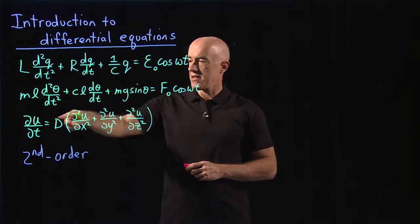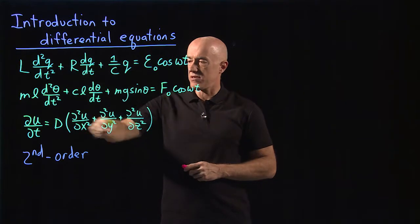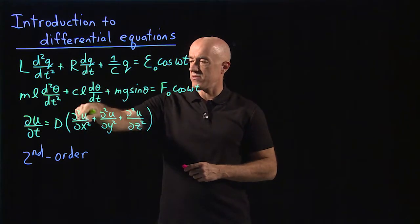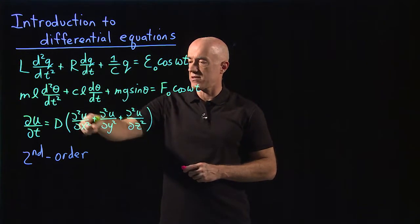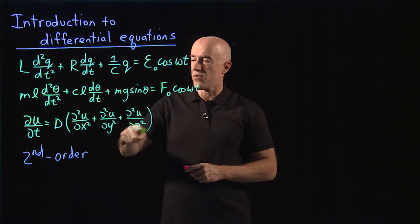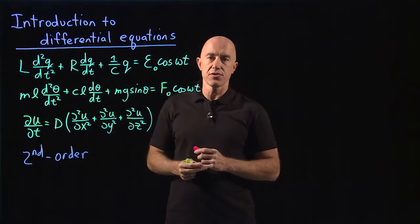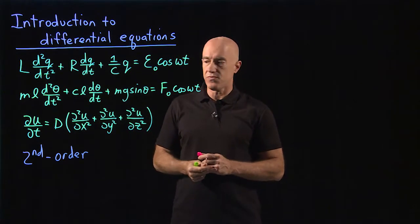And the last equation we have a partial squared u with respect to x squared, which is also a second order derivative.